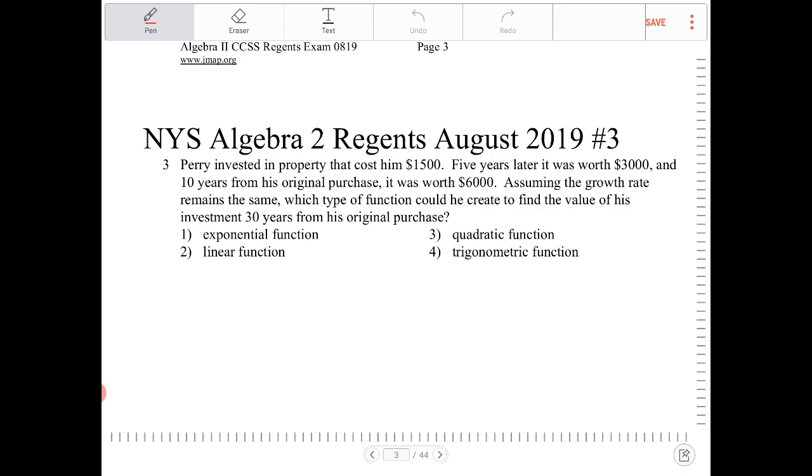Assuming the growth rate remains the same, which type of function could he create to find the value of the investment 30 years from his original purchase?